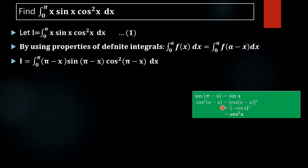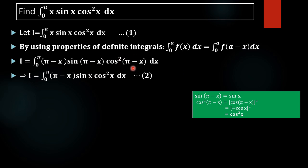For cos(π−x), since we are in the second quadrant where only sine and cosecant are positive, we get cos(π−x) = −cos(x). Therefore, cos²(π−x) = (−cos x)² = cos²(x). Applying these, we get I = ∫₀^π (π−x)·sin(x)·cos²(x) dx. We name this equation 2.